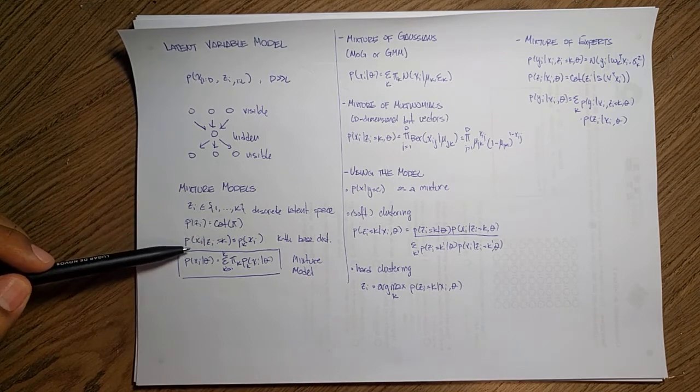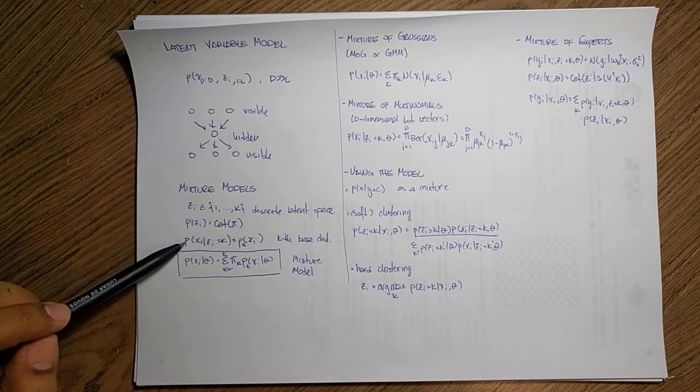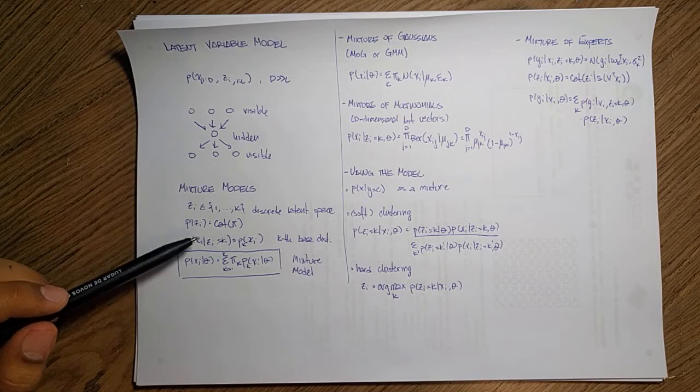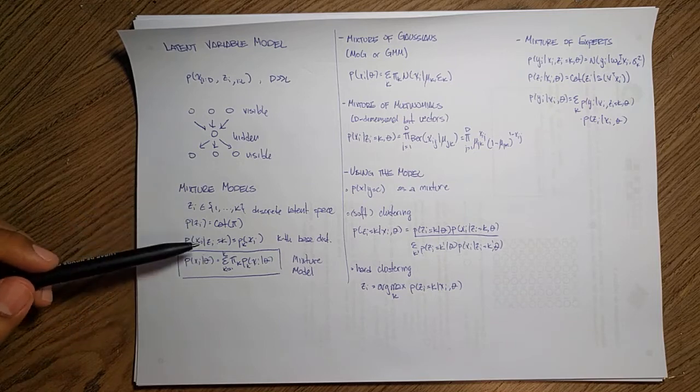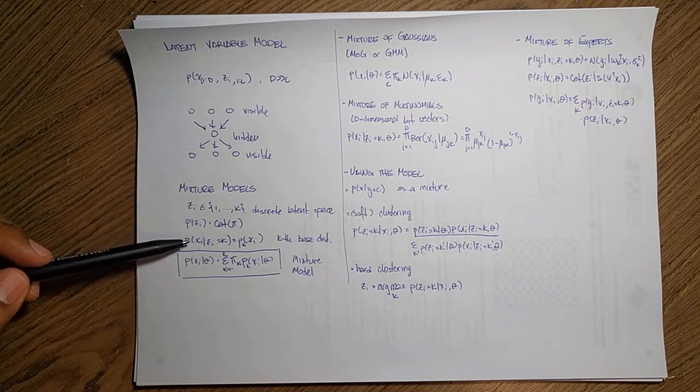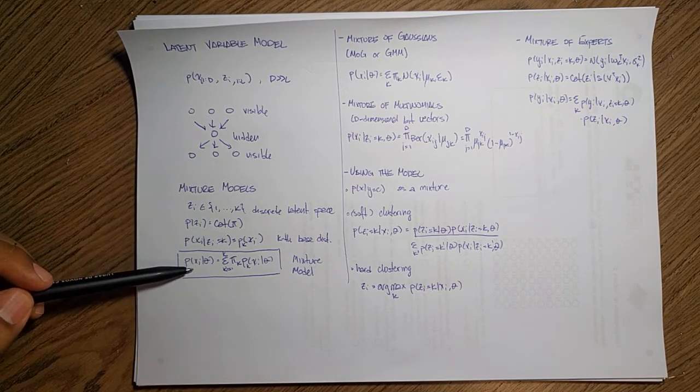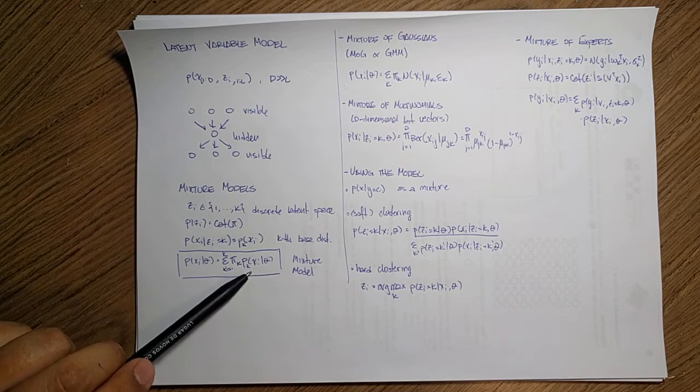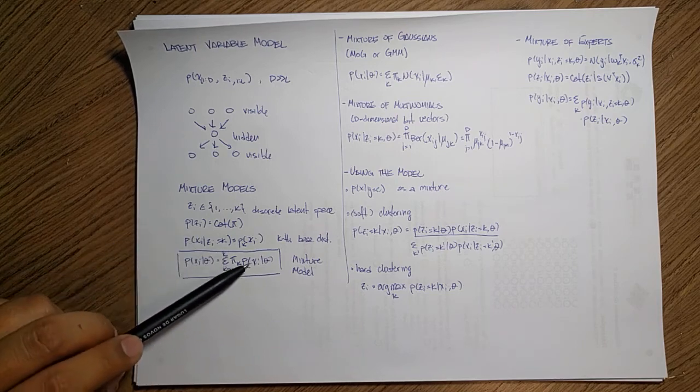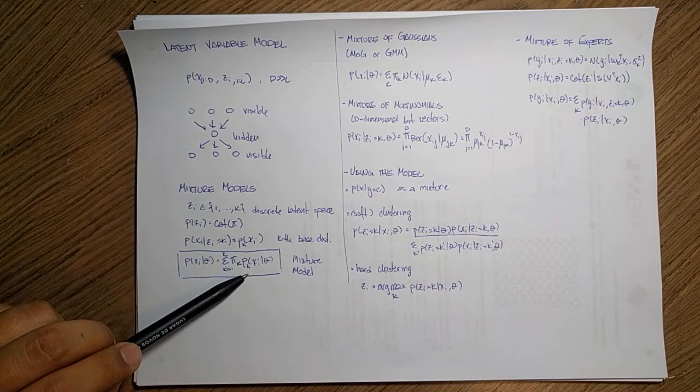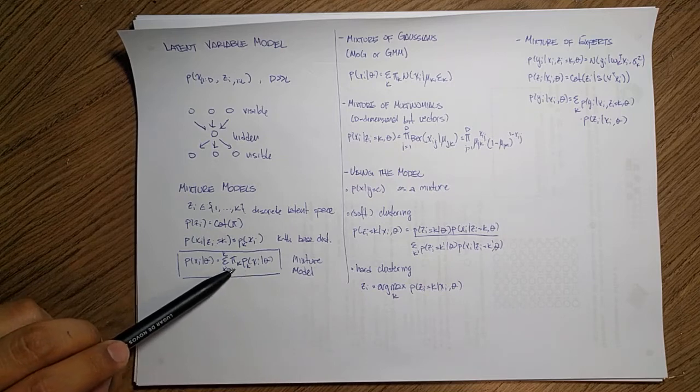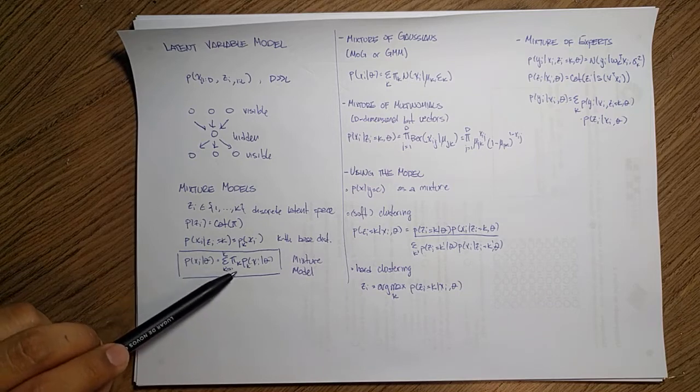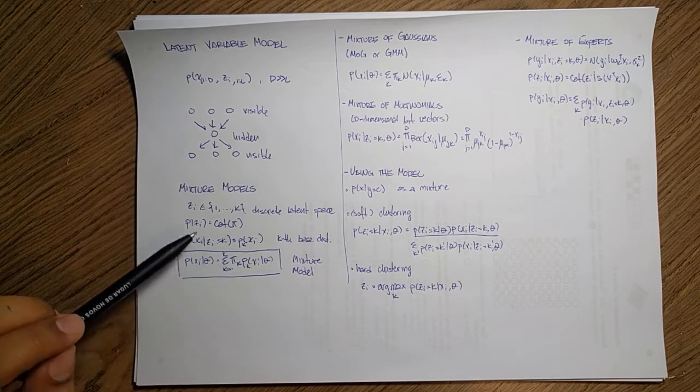And then what we would use is that we would use a particular base distribution. And this base distribution represents what that category knows about the data. So at the end, when we want to do some prediction of this XI, what we do is to ask each of those models. And that's why it is a mixture, because we're mixing the results of all of their beliefs with respect to some prior information, with respect to some probability of how likely that data is.